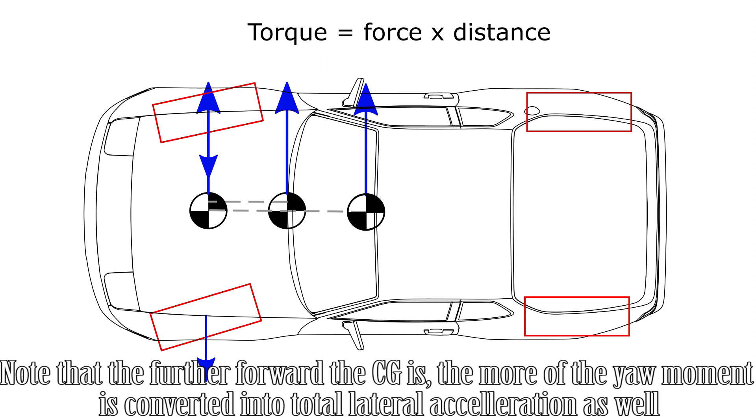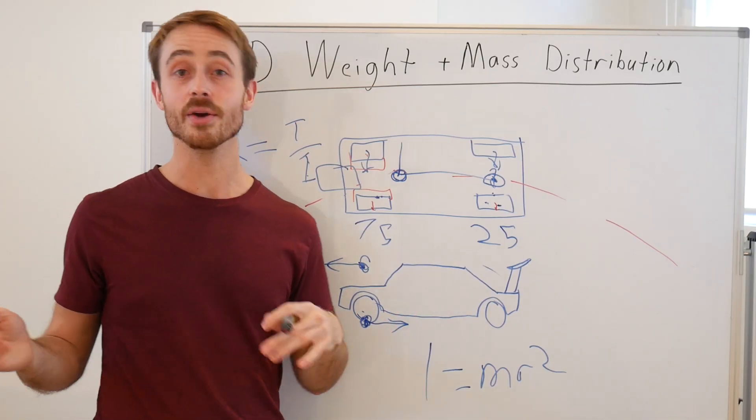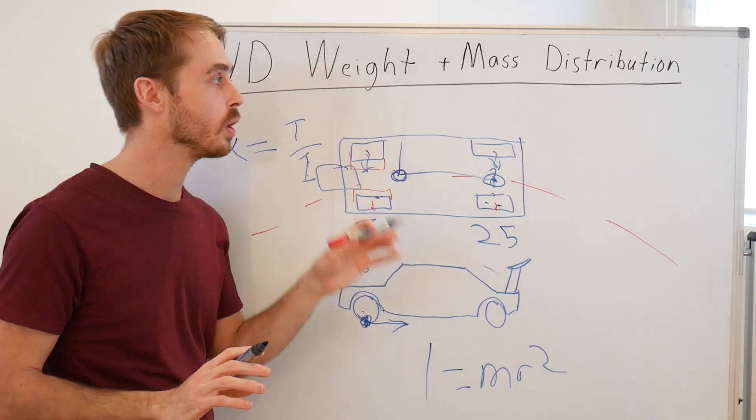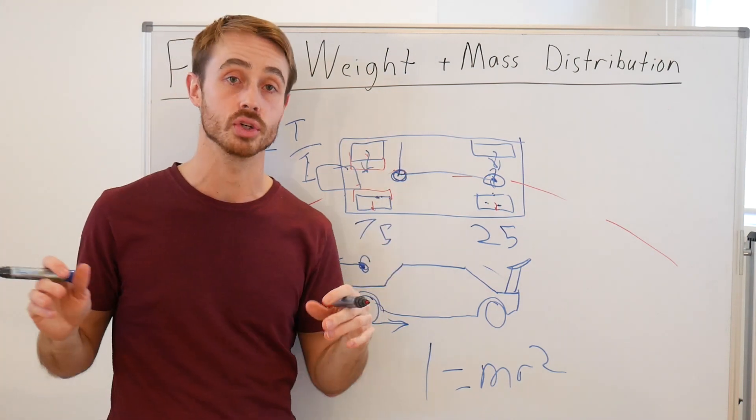You can see this by the fact that if the center of gravity was directly on the axle line of the front axle, there would be no distance between the center of gravity and the front wheels, and as such no torque can be generated around the center of gravity by the front axles.